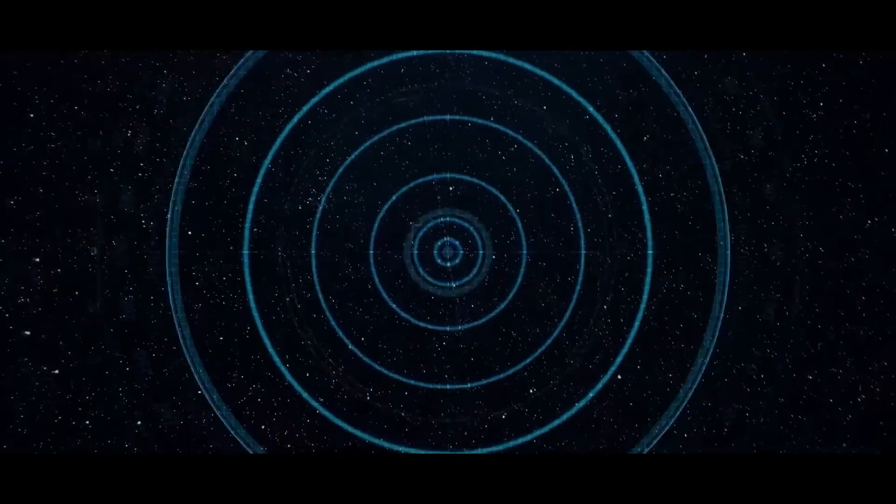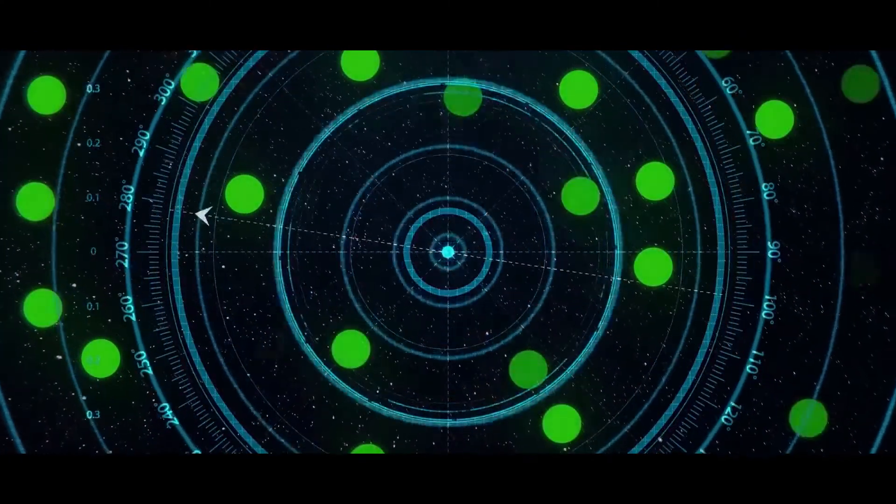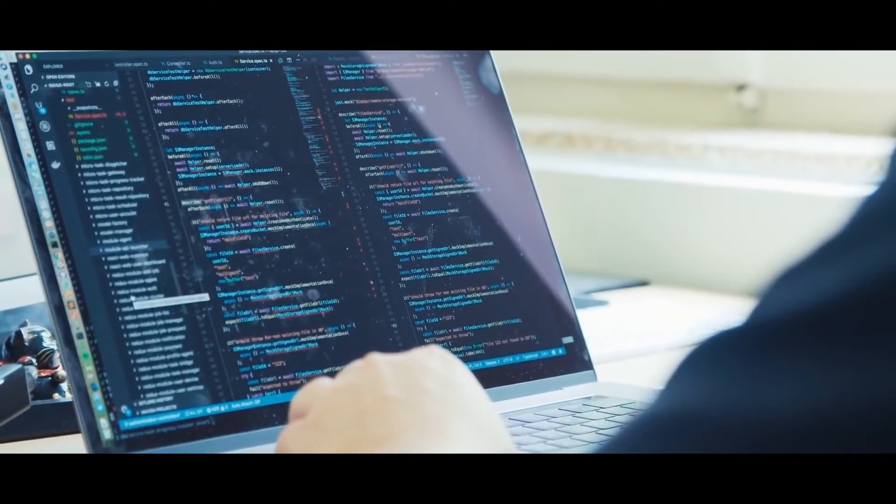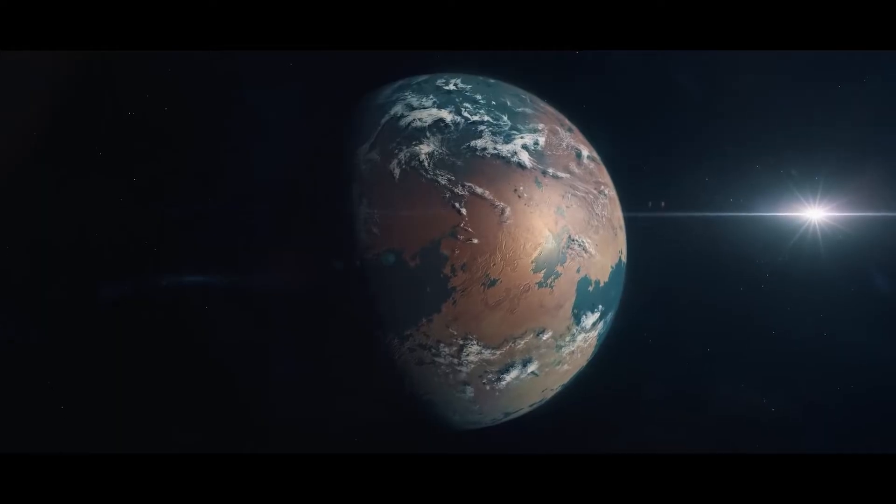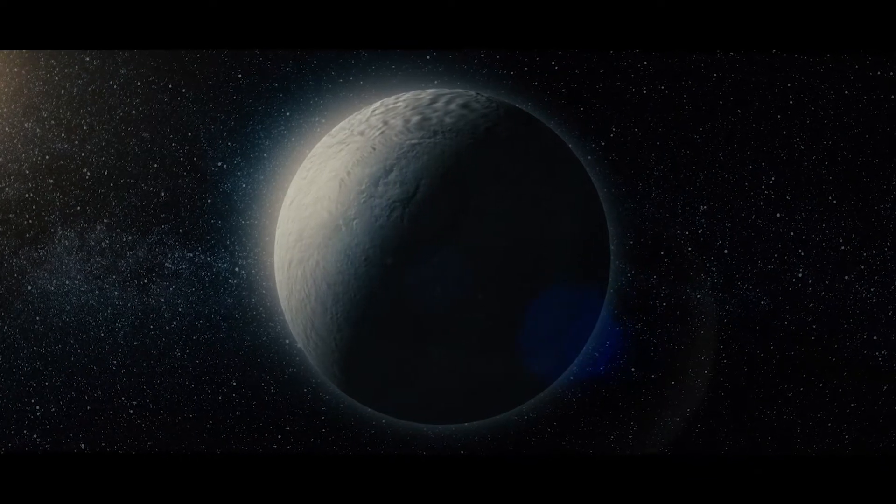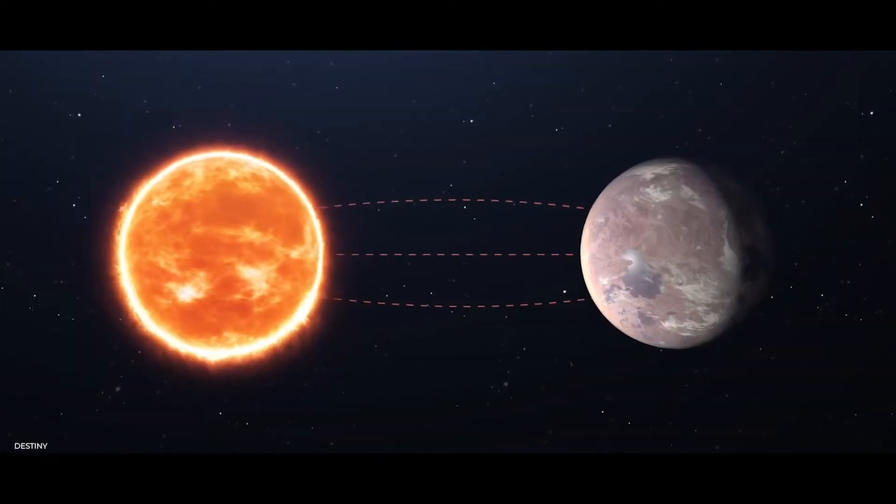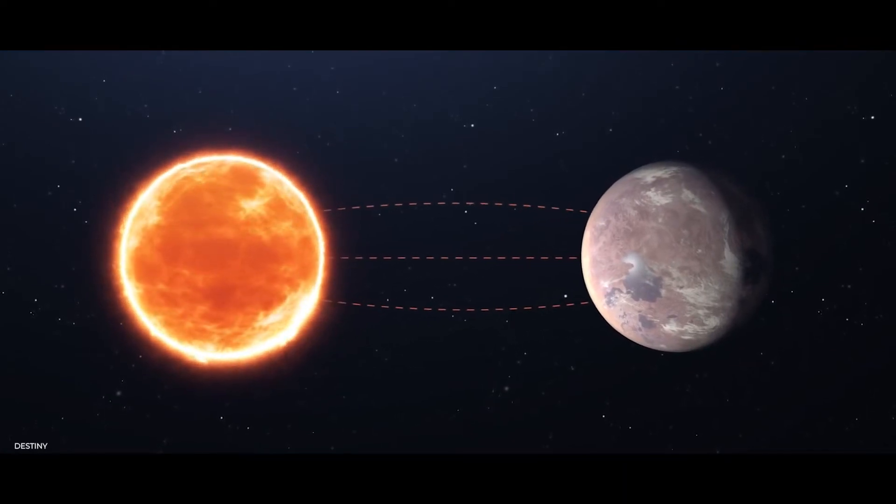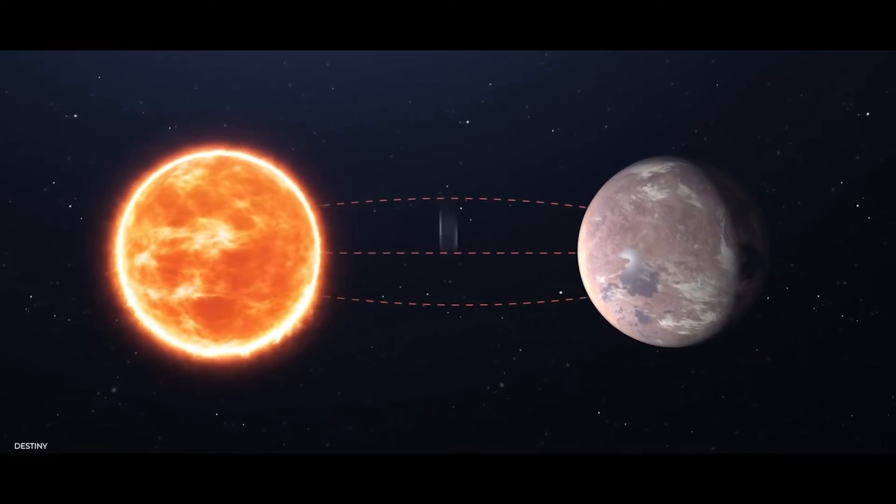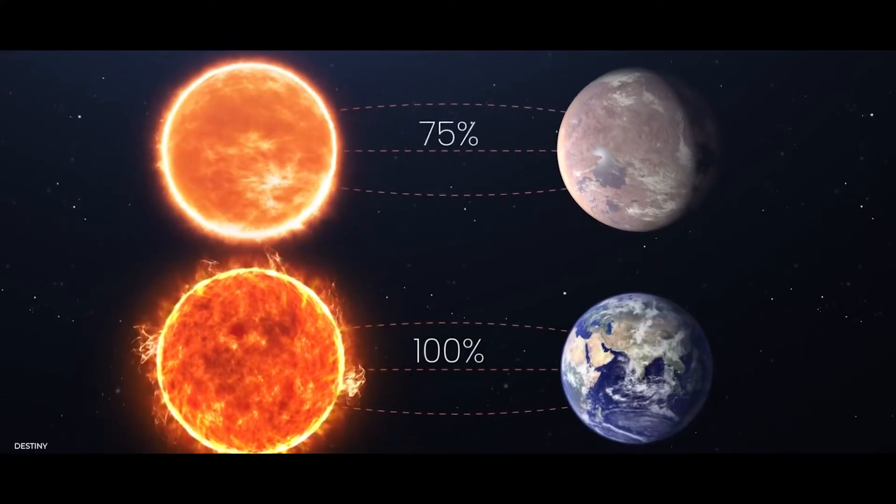When the initial data was collected from the telescope, a computer algorithm mistakenly identified the planet as a false positive. But later, in 2020, it was discovered to be a planet. Scientists also found that this planet receives 75% of Earth's light from the sun.